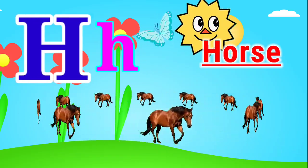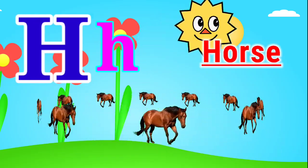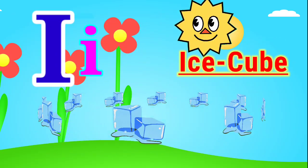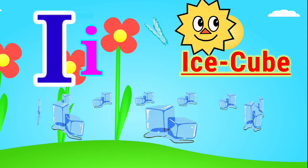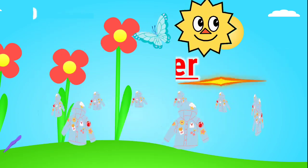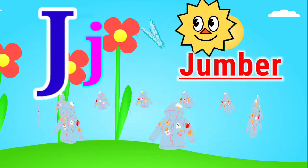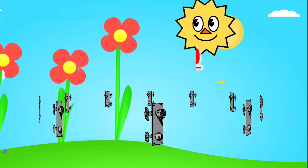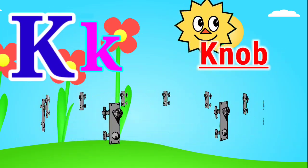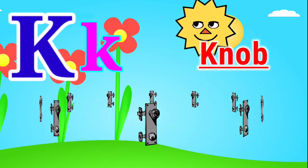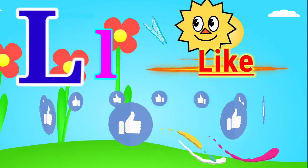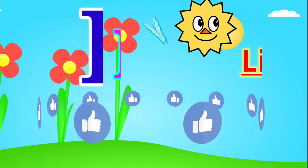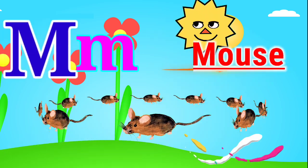H for horse. I for ice cube. J for jamjar. K for knob. L for light. M for mouse.